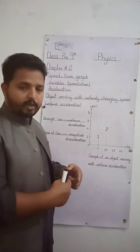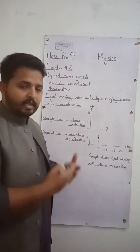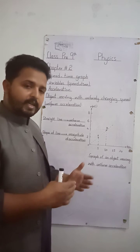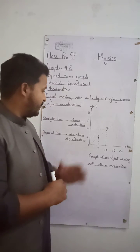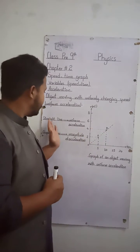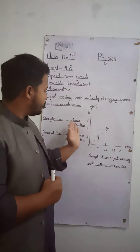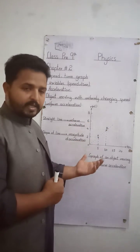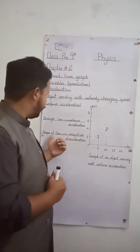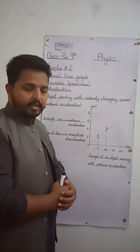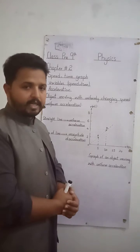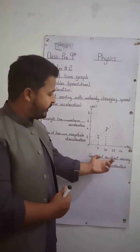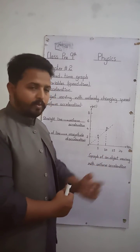Change in velocity of the body means acceleration is present. As the change in velocity is constant, acceleration is also uniform. In this case, a straight line shows uniform acceleration. If the line is straight, it means acceleration is uniform, and the slope of the line gives the magnitude of the acceleration. This is the graph of an object moving with uniform acceleration.